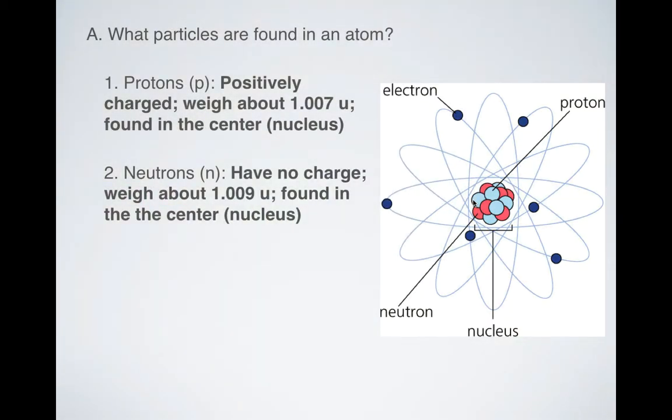What about neutrons? Neutrons have no charge. They weigh a little bit more than protons, but are almost exactly the same. You can see they're almost the same, and they're also found in the center of the nucleus.